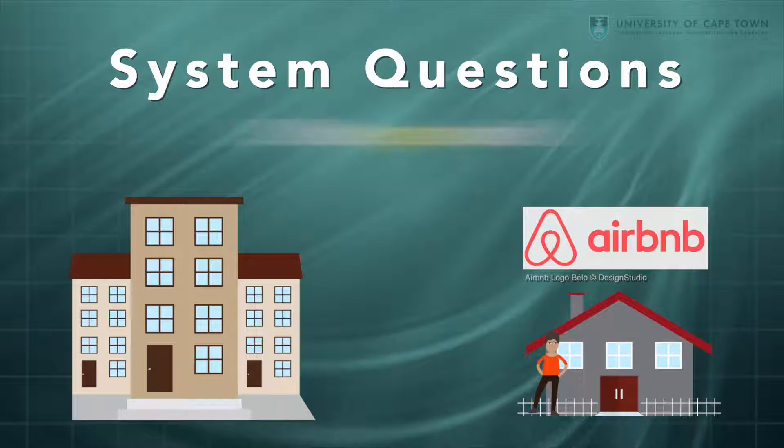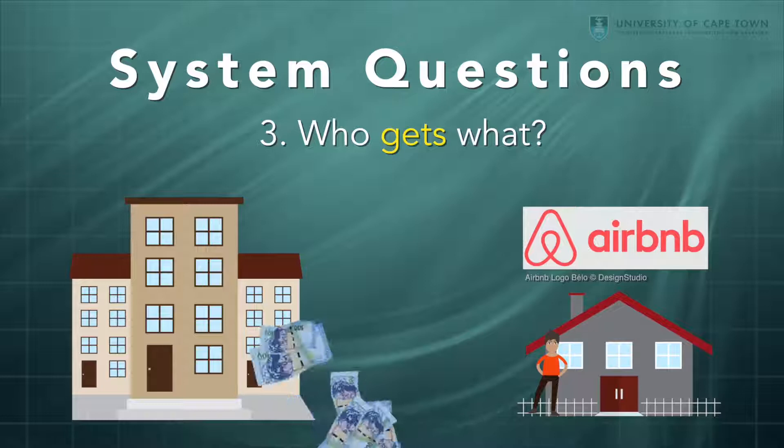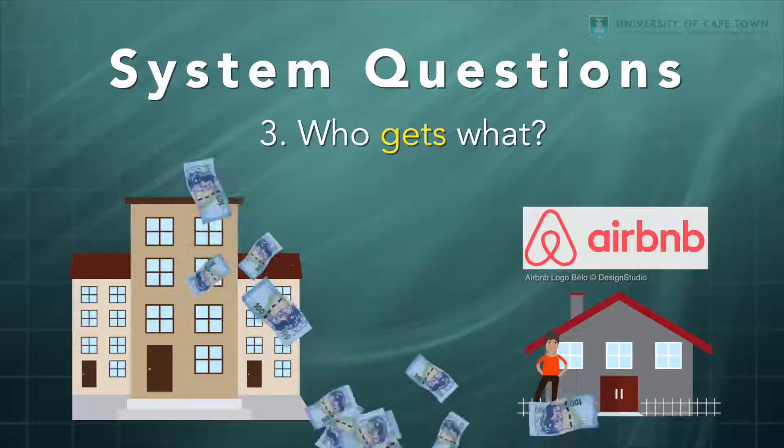We'll stay with that example for a minute because Airbnb also represents a challenge to the third question, who gets what? This is about resources. The resource in question may be money, how money is flowing through the system. Clearly something like Airbnb changes the money flow from going through the hotel industry to going directly to homeowners, people who are renting out their spaces.